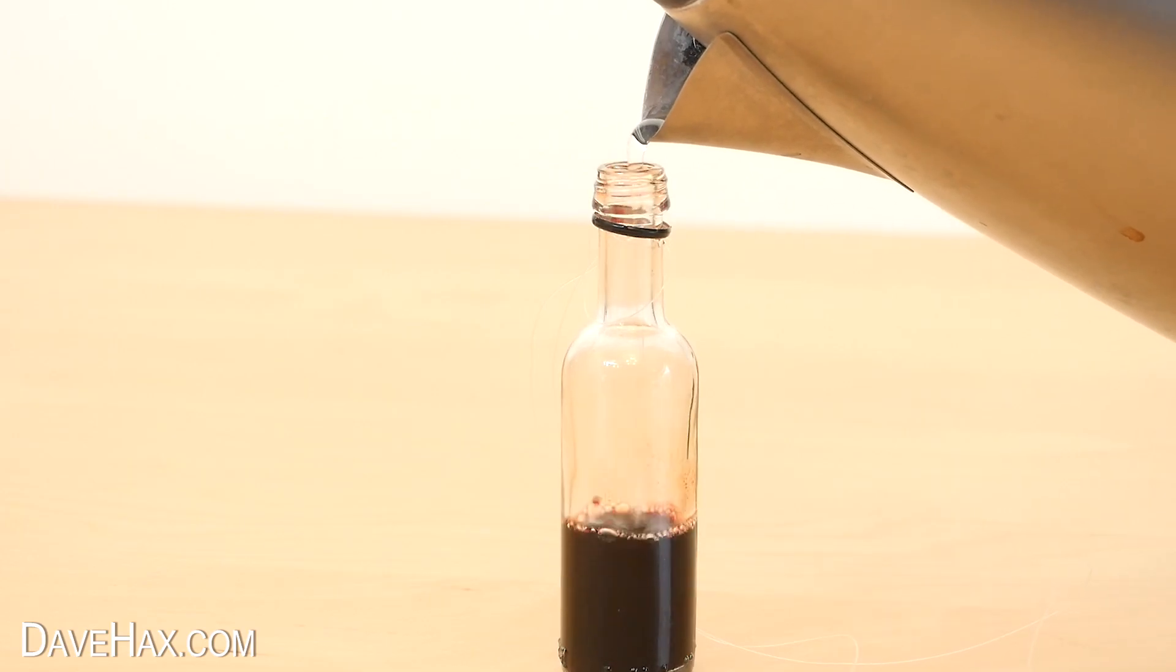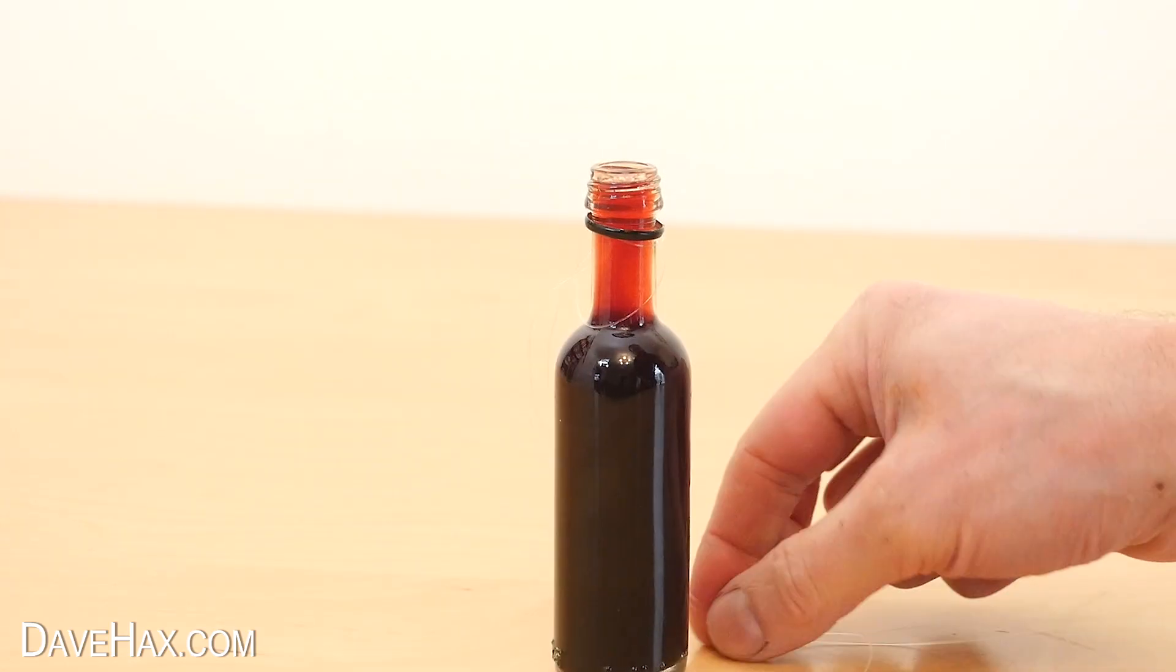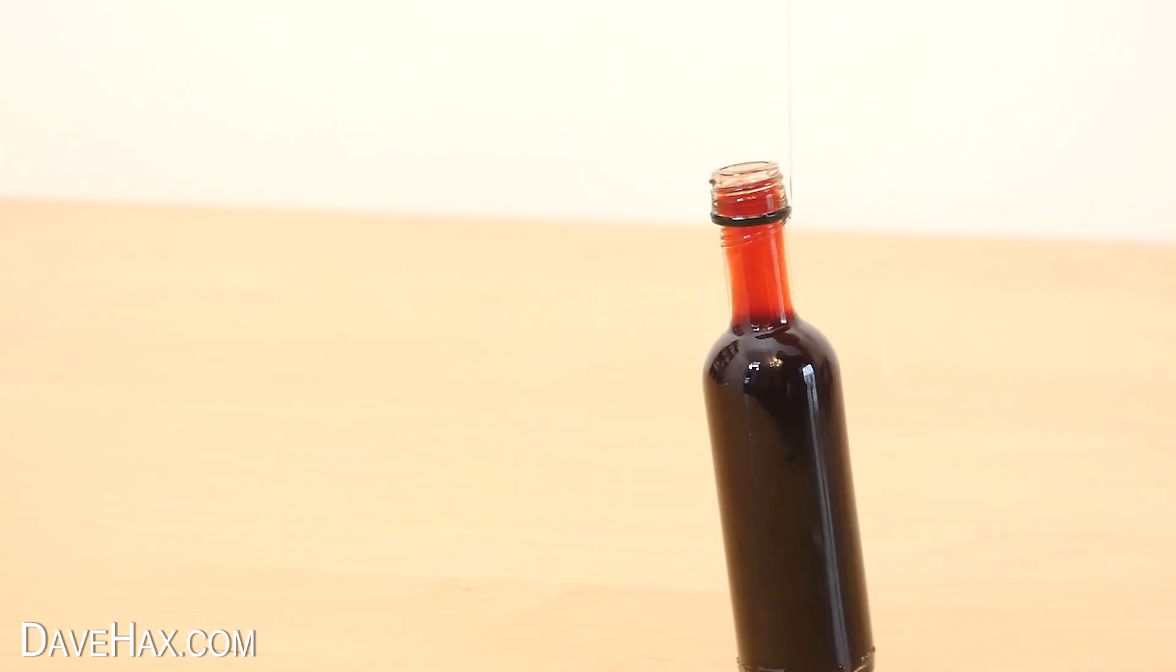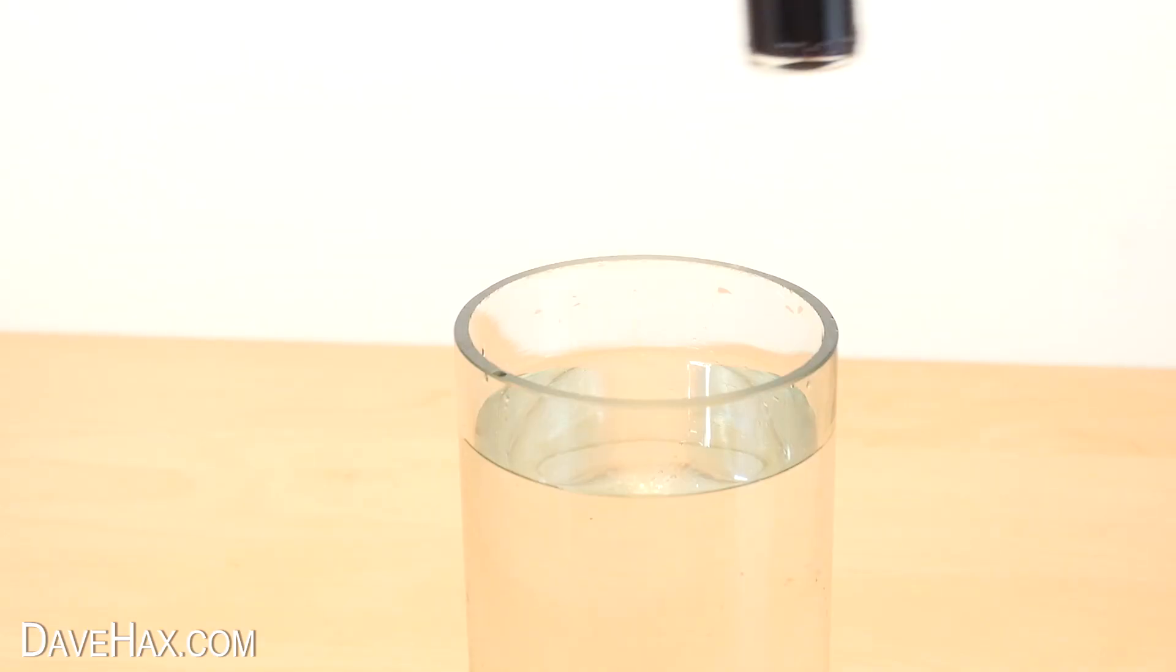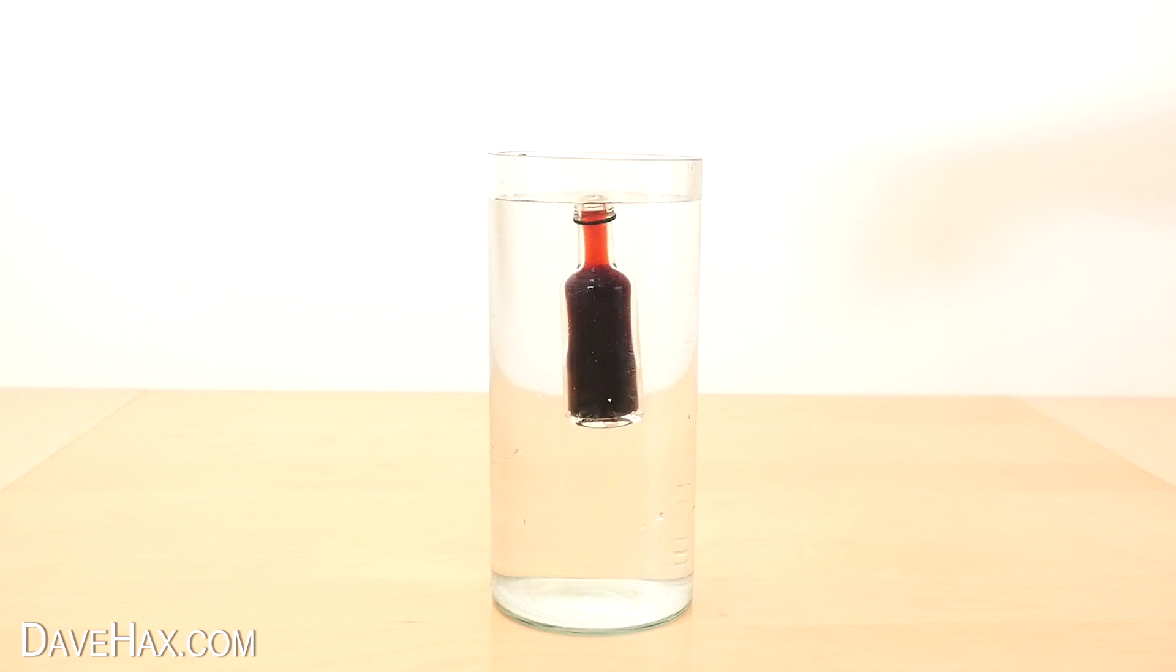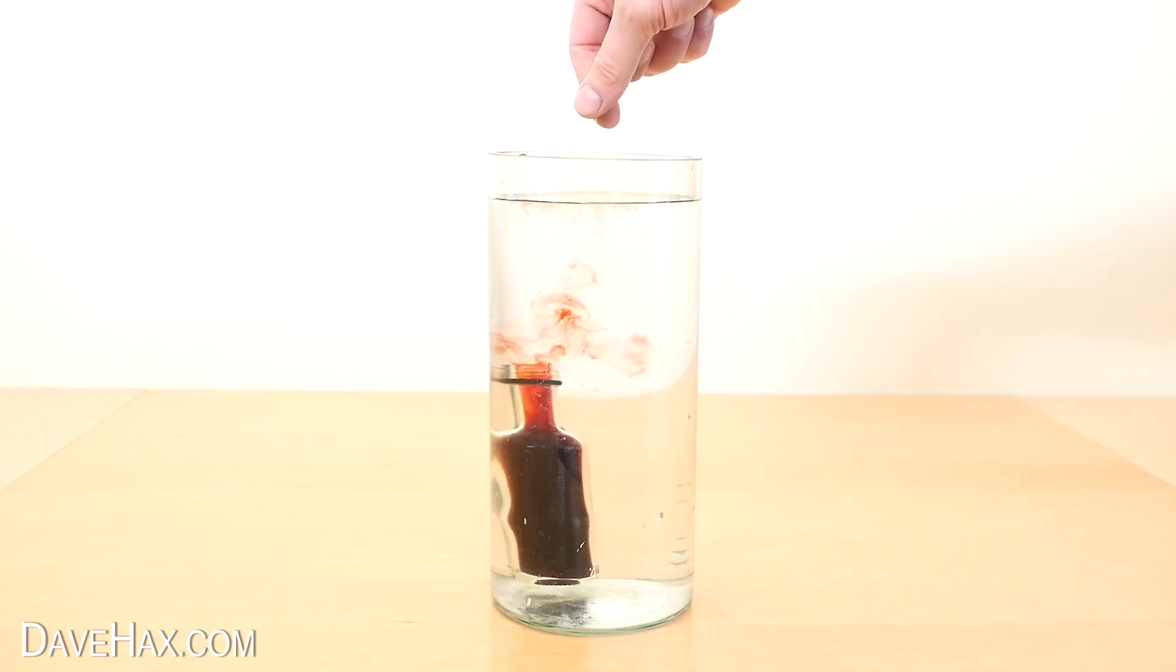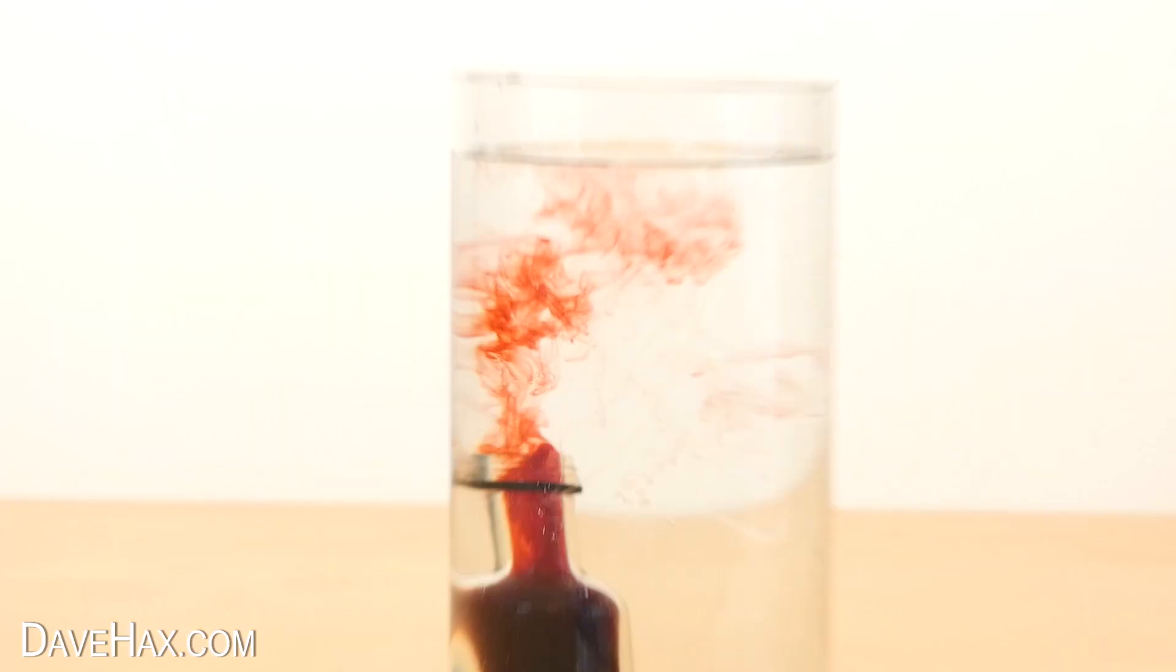This water's not quite boiling. When it's full, lift it up by the string and lower it into the vase. The moment it gets submerged by the cold water, the hot red water starts to escape out of the bottle.